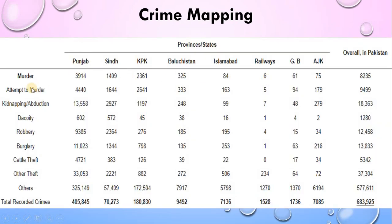Crime mapping covers many kinds: murder, attempt to murder, kidnapping, custody, robbery, burglary, cattle theft, and others. In Pakistan across different provinces, most crime has occurred in Punjab — the most recorded crime type is 'others', then kidnapping and abduction, then burglary and much more. Then we have Sindh, then KPK, then Balochistan, Islamabad, Railways, GB, AJK, and overall Pakistan the crime rate is going on at a very severe rate.